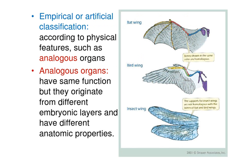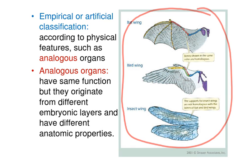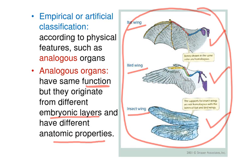Early scientists started with empirical or artificial classification based on analogous organs. Analogous organs have the same function — such as bat wings, bird wings, and insect wings, all used for flying — but they originate from different embryonic layers and have different anatomical properties. According to analogous organs, these three organisms would be placed in the same group, but today we know the bat is a mammal, the bird is a bird, and the insect is an arthropod.